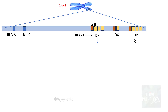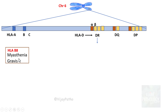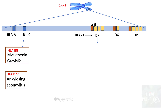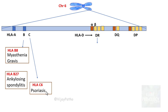Starting with HLA class 1 associations: HLA-B8 is associated with myasthenia gravis, an autoimmune disorder that disrupts communication between nerves and muscles, causing muscle weakness. HLA-B27 is very strongly associated with ankylosing spondylitis, a type of arthritis affecting the spine and leading to inflammation and pain. HLA-C6 is linked with psoriasis, a condition characterized by rapid epidermal proliferation resulting in thick red scaly patches on the skin. So the key class 1 associations are myasthenia gravis, ankylosing spondylitis, and psoriasis.